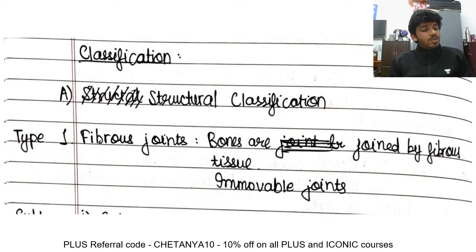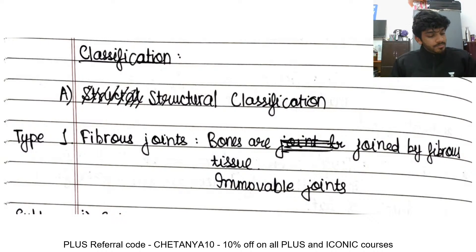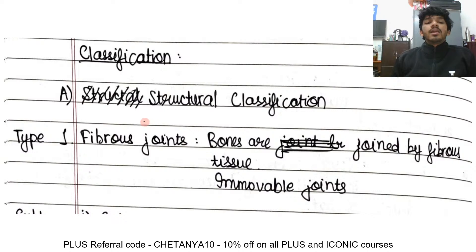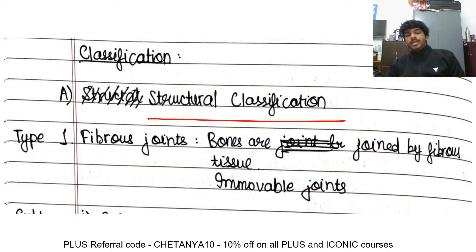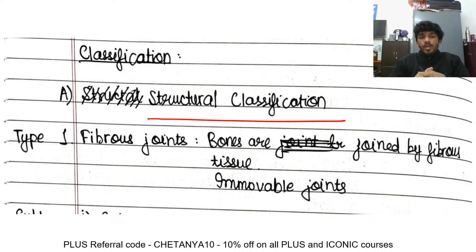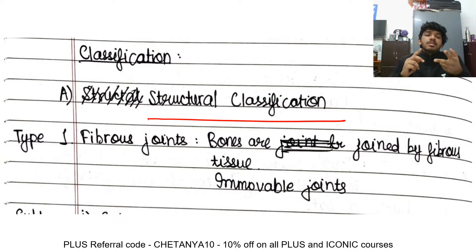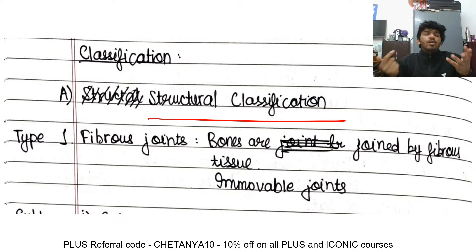Let's start with joints. The structural classification of joints is based on what structure is present in the joint. If it's fibrous tissue, it's a fibrous joint. If it's cartilage, it's a cartilaginous joint. If there is synovial fluid, it's a synovial joint.